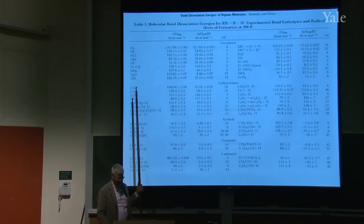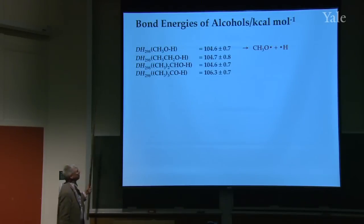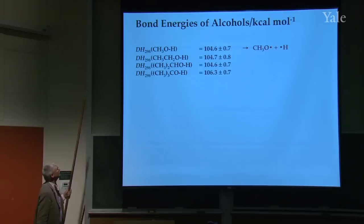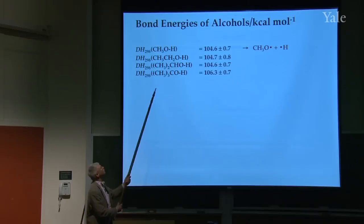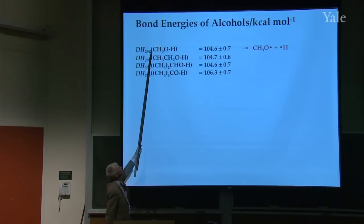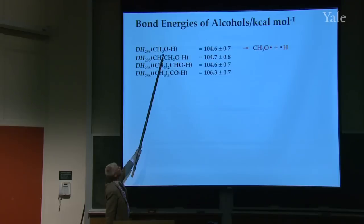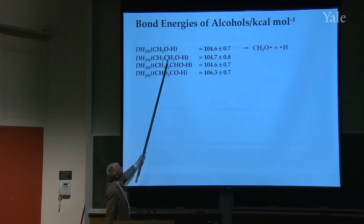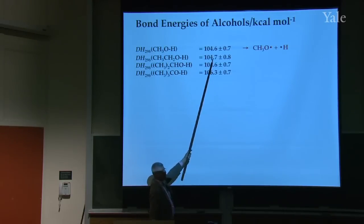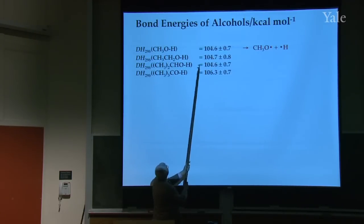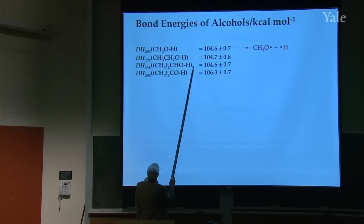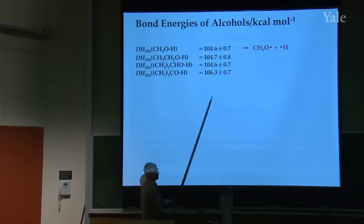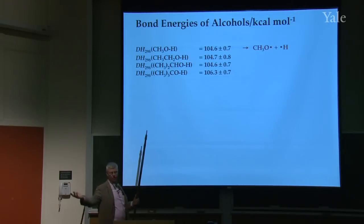Let me talk about these bond energies. If you have an alcohol — I did methanol — this is the OH bond in methanol. You might hope the OH bond in ethanol would be the same, and it's exactly the same within our uncertainty. If you go to isopropyl alcohol or t-butyl alcohol, t-butyl alcohol is a little larger, but amongst friends it's all about 104 or 105 kcal/mol.